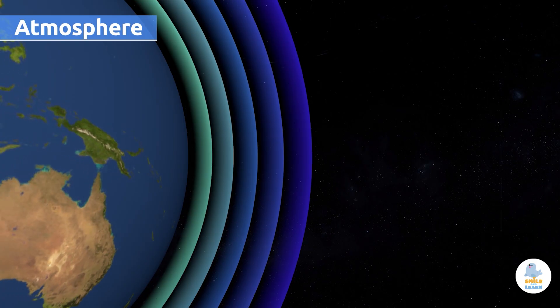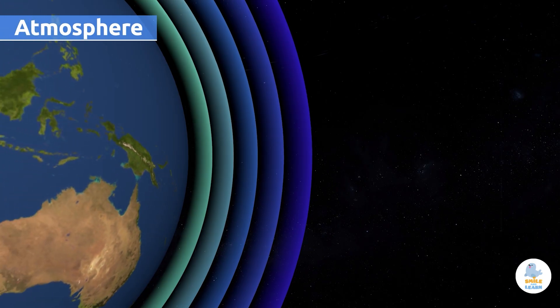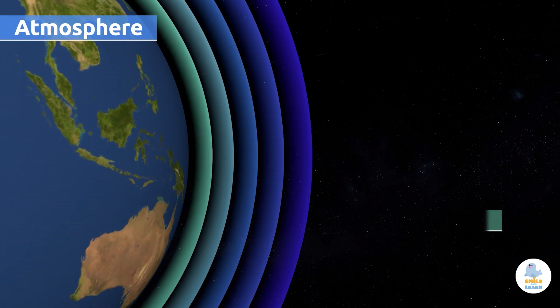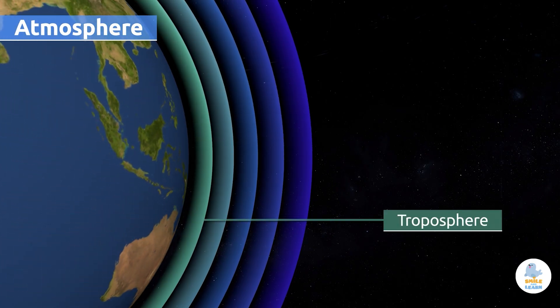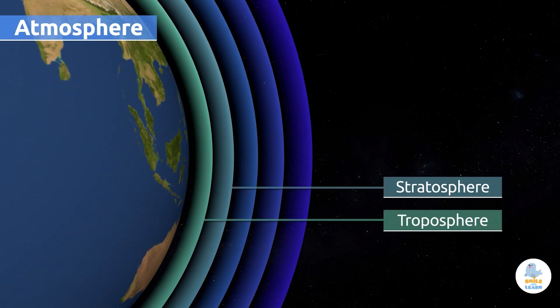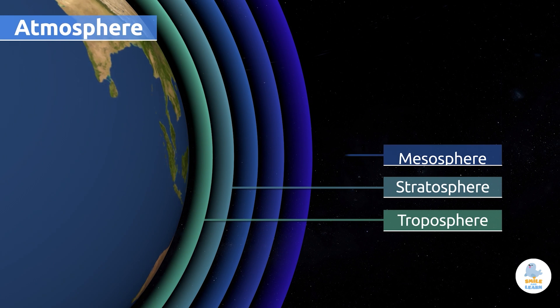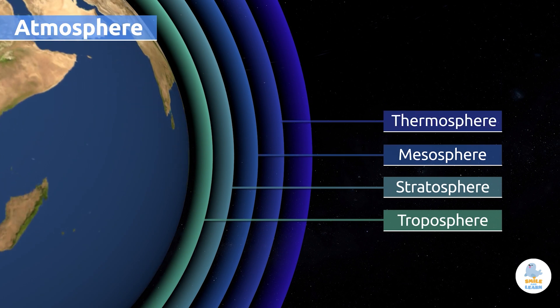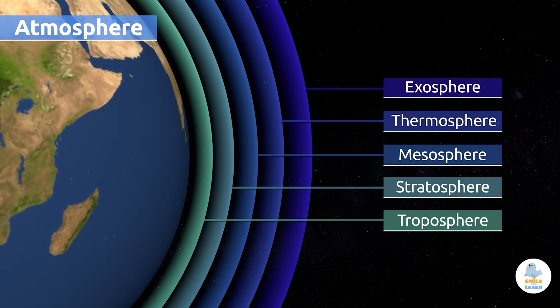The atmosphere is divided into five main layers: the troposphere, the stratosphere, the mesosphere, the thermosphere, and the exosphere.